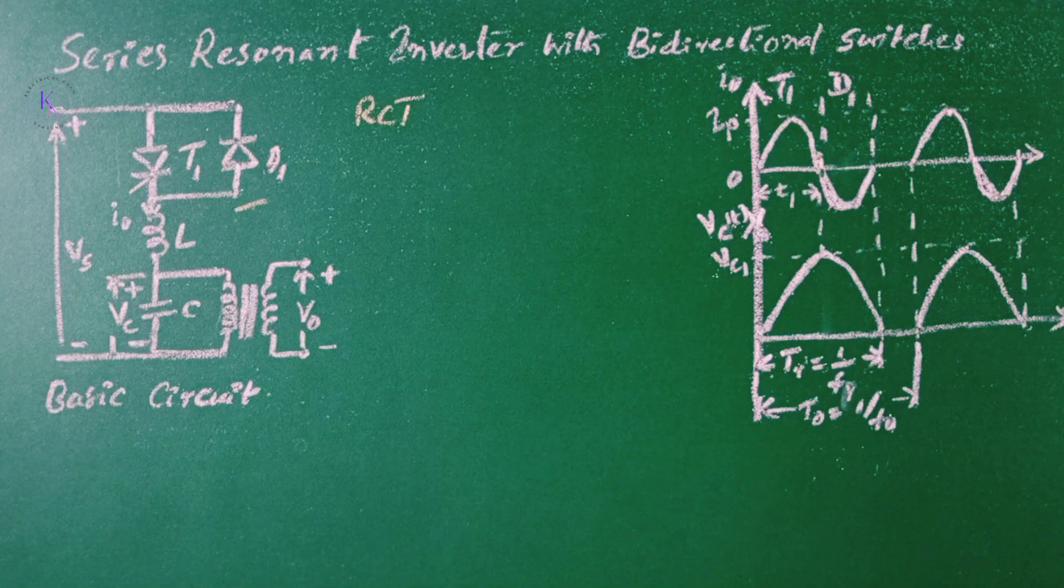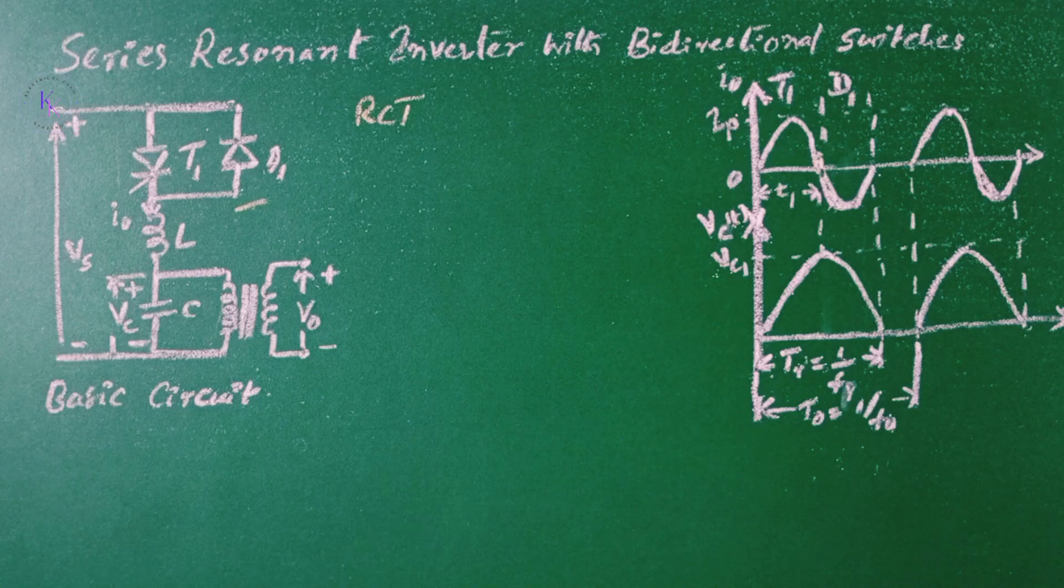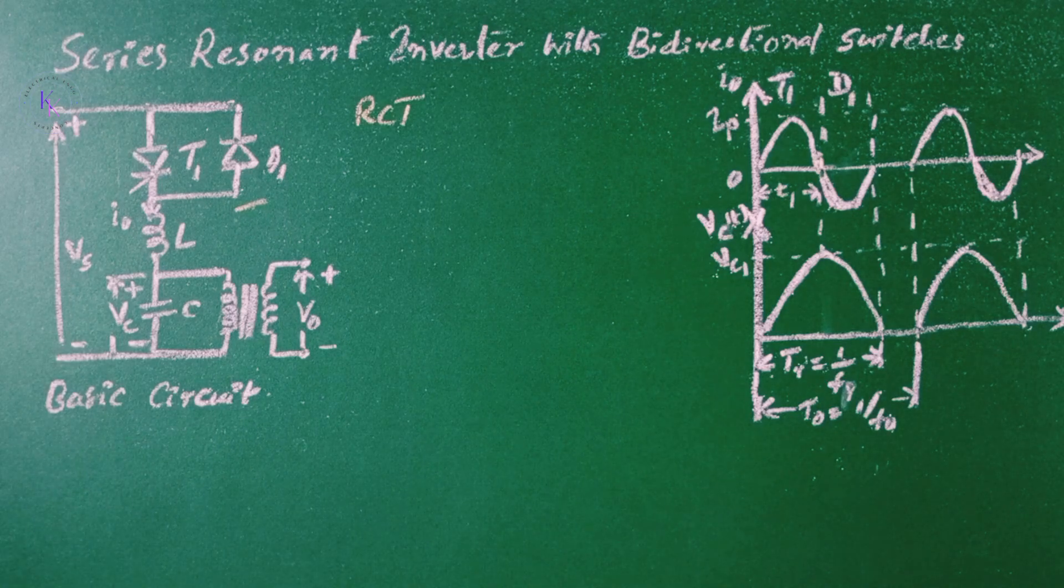The reverse voltage of the thyristor is limited to the forward voltage drop of a diode and forward voltage drop of a diode is typically 1 volt.